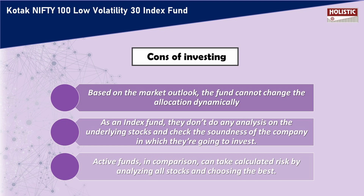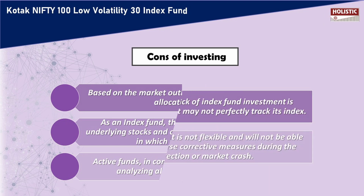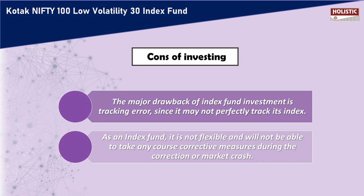An index fund also cannot analyze underlying stocks and check the soundness of individual companies. An actively managed fund uses active stock selection — analyzing every stock before including it in the portfolio. An index fund only tries to replicate the complete index. The major drawback is tracking error since it may not perfectly track its index, and it is not flexible enough to take corrective measures during market corrections or crashes.